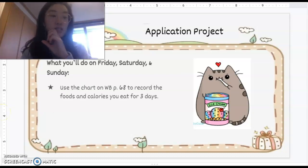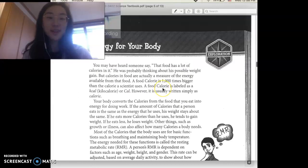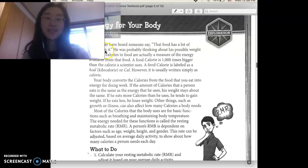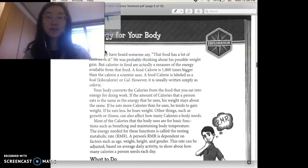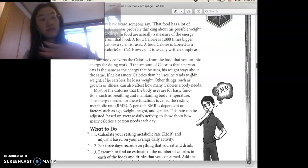So let me actually go ahead and explain this for you guys by reading our textbook page 95. So go ahead and open up your textbook. I'm gonna go ahead and read it out loud. You may have heard someone say that food has a lot of calories in it. He was probably thinking about his possible weight gain, but calories and food are actually a measure of the energy available from that food. A food calorie is a thousand times bigger than the calorie that a scientist uses.